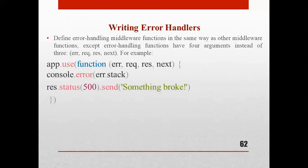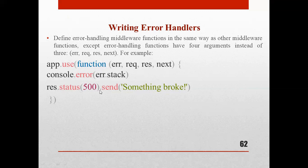When writing an error handler, define error handling middleware in the same way as other middleware functions, except error handling functions have four arguments instead of three: error, request, response, and next. For example: app.use with parameters error, request, response, and next — then console.error to print the error, and response.status(500).send('Something broken').